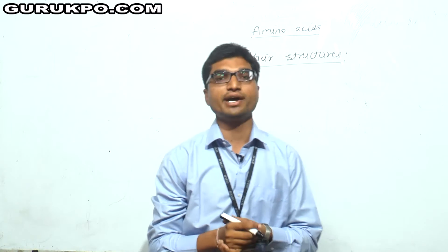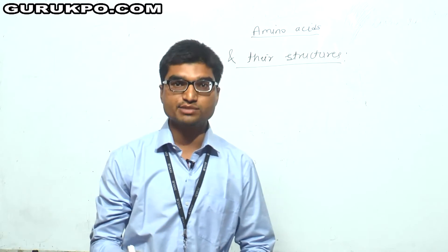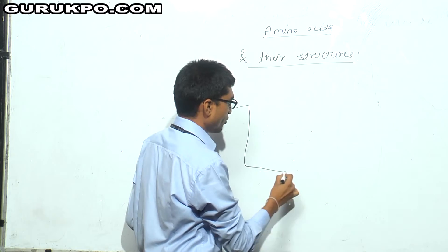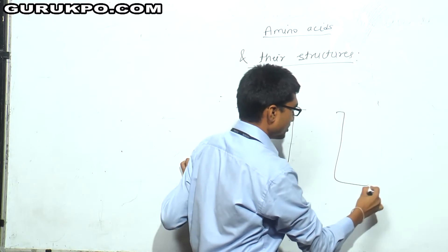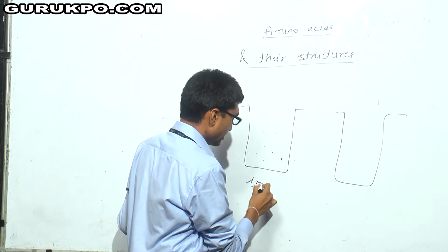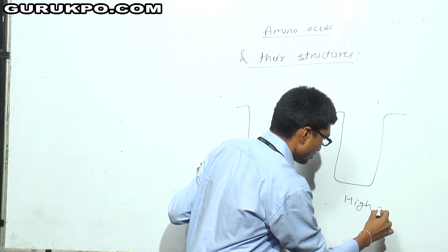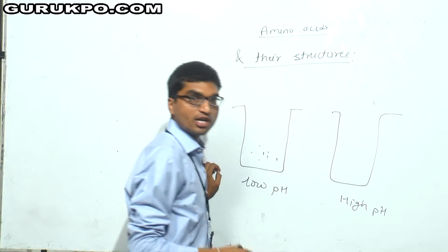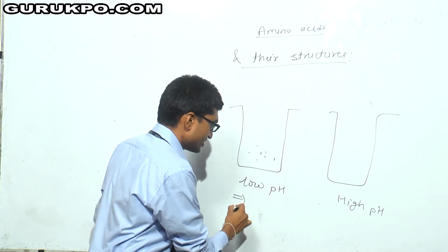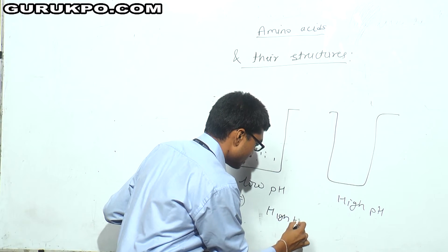The various types of charge present on amino acids. If a protein is placed in a low pH solution or in a high pH solution, which type of charge will be present on the amino acid? This can be easily solved by a simple trick: low pH means there will be high H⁺ ion concentration.